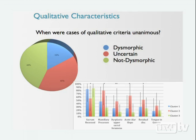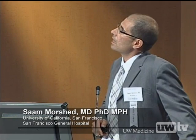Among cases confidently classified, a histogram of criteria by cluster showed that sacral recession and mammillary processes, dysplastic upper sacral foramina, acute alar slope, and residual disc were associated with the cluster having short upper sacral segment corridors but long second sacral segment corridors. Tongue and groove criteria tended to be the least reliable. Regarding sacralization of L5, spine surgery colleagues often equate this with dysmorphic sacrum, but our data suggest otherwise.